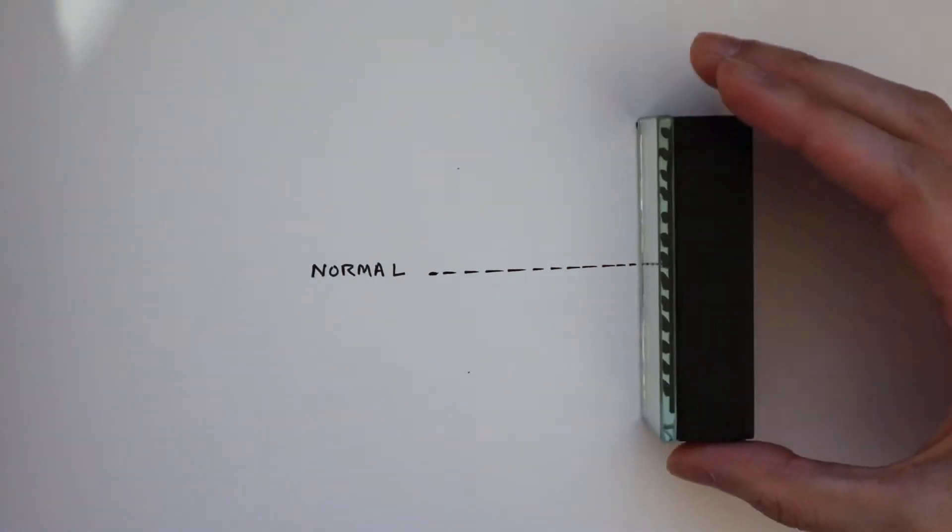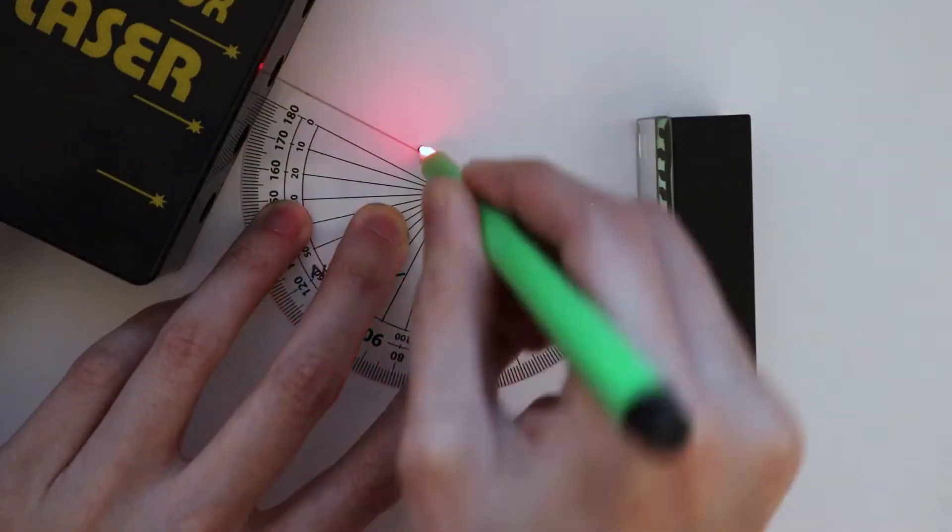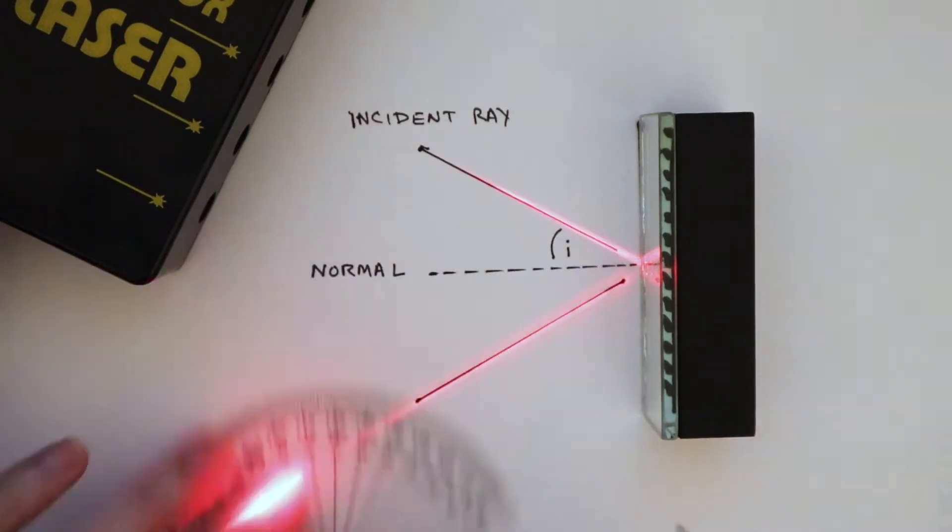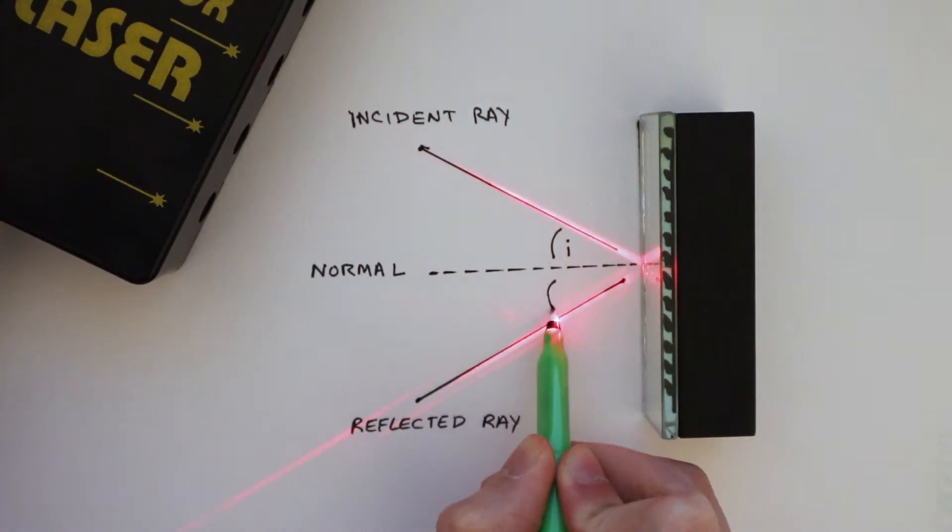If I shine an incident ray at the mirror, I can mark out the angle here, which is the angle of incidence I.